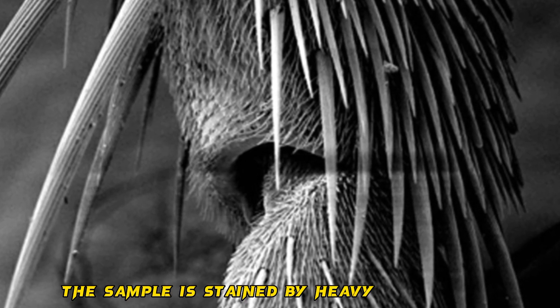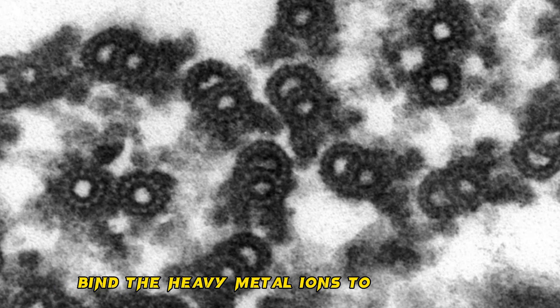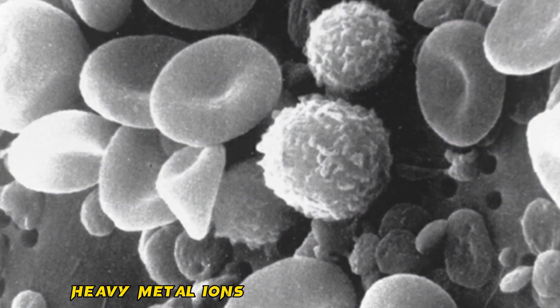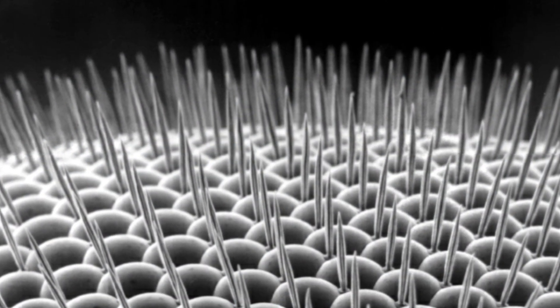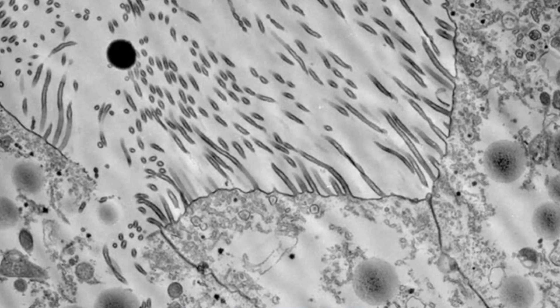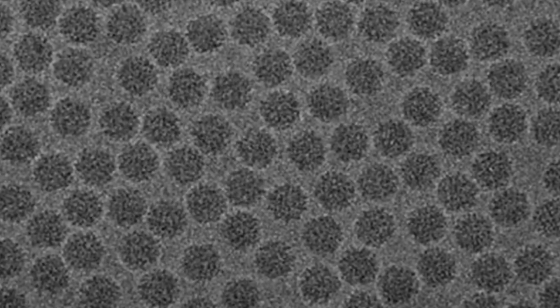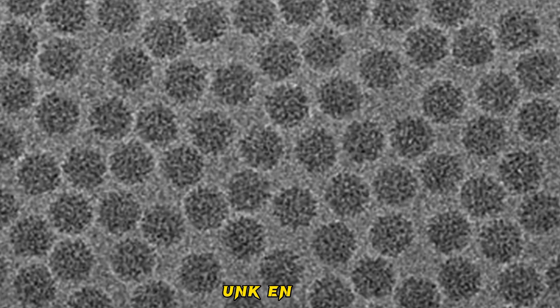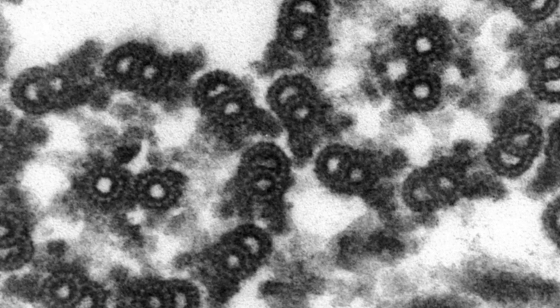The sample is stained by heavy metal salts. Different parts of the sample bind the heavy metal ions to different extents. Heavy metal ions scatter electron beams and thus cause dark areas on the image.